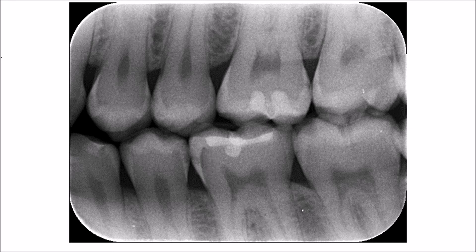Looking at the mesial surface of the lower six, you will see the distinctive appearance of a triangular radiolucency at the mesial surface in the enamel. There is another radiolucency just beneath the dentino-enamel junction, which means the caries has gone well into both enamel and dentine.